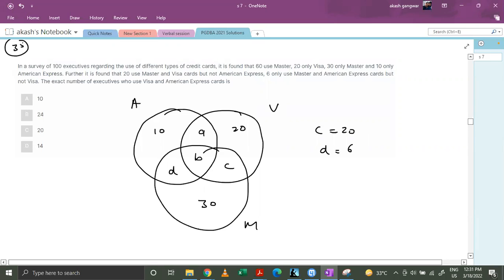Now it's also given that the total number of users of Mastercard is 60. So we got c as 20, we got d as 6, so basically b equals to 4, because this plus this plus this plus this should be 60.